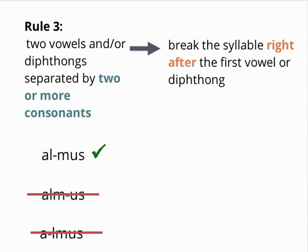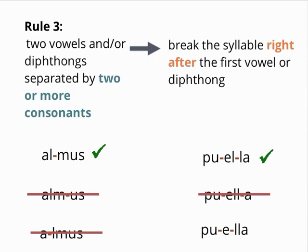This even applies to words with repeated consonants, which were pronounced separately: pu-el-la, not pu-el-ah or puel-la.